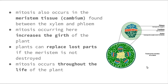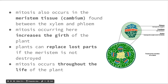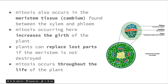Mitosis also occurs in the meristem tissue, more commonly referred to as cambium, which is found between the xylem and the phloem — the vascular tissue. Looking at this magnified cross-section image of a stem, the xylem and phloem are located adjacent to one another, and the cambium cells that undergo cell division occur in the middle. It is mitosis in this cambium — the red parts between the phloem and xylem — that increases the girth or width of the plant.